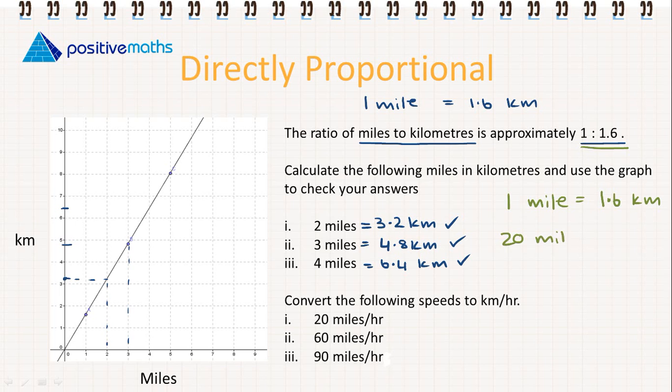Now we want to find 20 miles, 60 miles, and 90 miles. Again we need to multiply 1.6 by 20 and we will find 32. 1.6 by 60 and we will find 96. And 1.6 by 90 and we find 144.